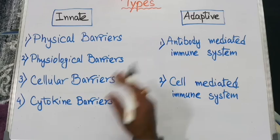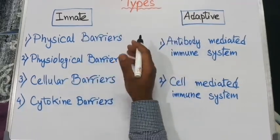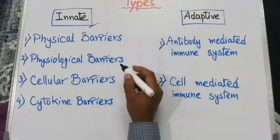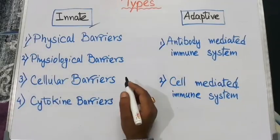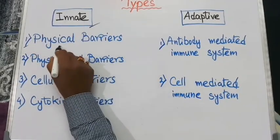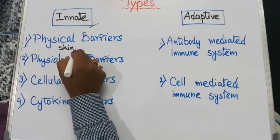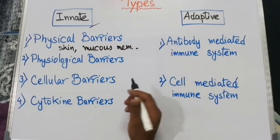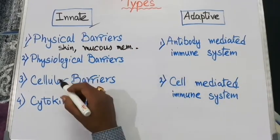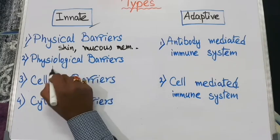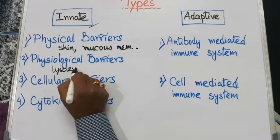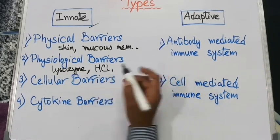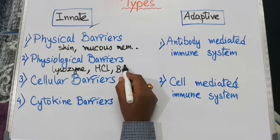Let's start with the components of the innate immune system. The first component is physical barriers — different kinds of epithelial linings like skin and mucous membranes act as physical barriers. The next type is physiological barriers, where lysozyme present in our saliva, HCl present in our gastric juice, bile, etc., act as physiological barriers.